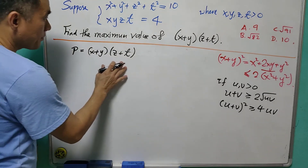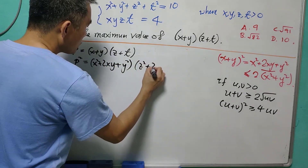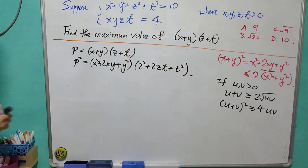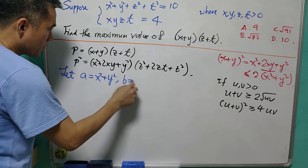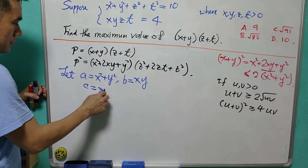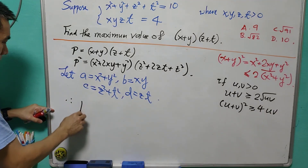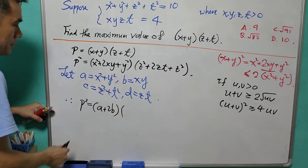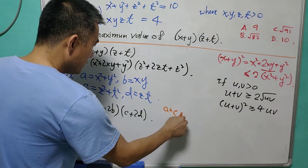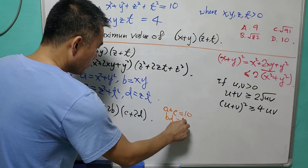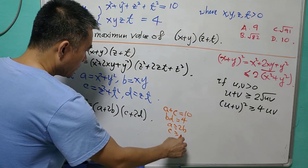We still let p = (x + y)(z + t), so p² = (x² + 2xy + y²)(z² + 2tz + t²). Now let a = x² + y², b = xy, c = z² + t², and d = tz. Then p² = (a + 2b)(c + 2d). We have the conditions: a + c = 10, b·d = 4, a ≥ 2b, and c ≥ 2d.